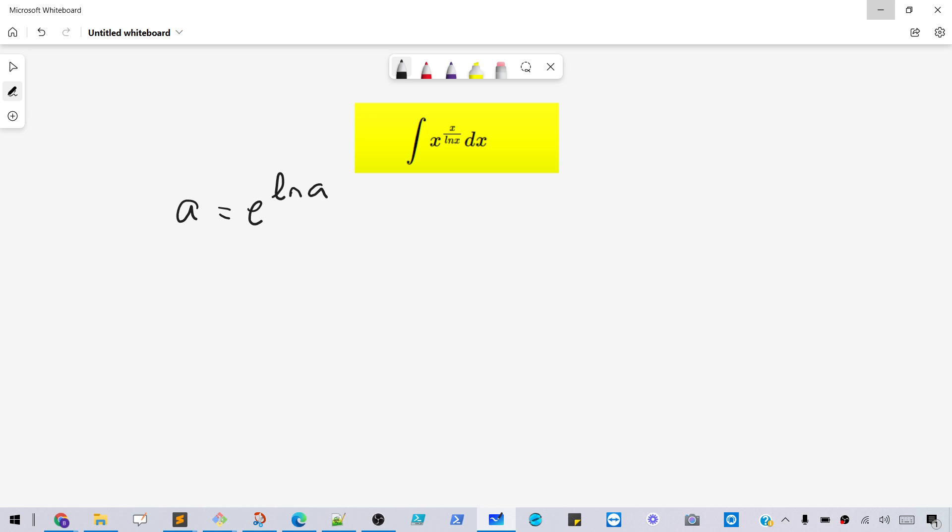If you had something like three, let's say, you could write that as e to the ln of three. And in our case, when we have x, we're going to write x as e to the ln x.